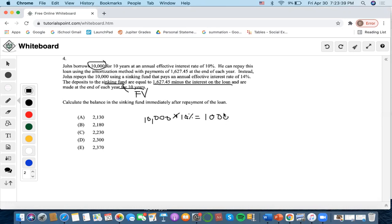The payments are equal to this minus interest. So we do $1,627.45 minus $1,000, which means that the sinking fund payments are $627.45.